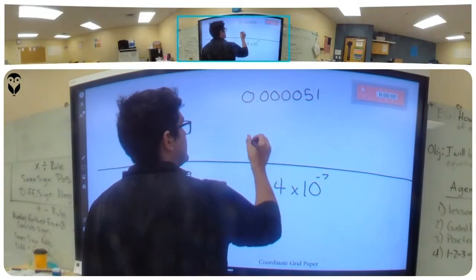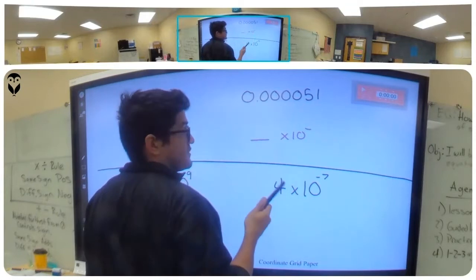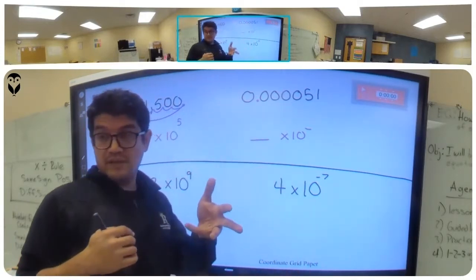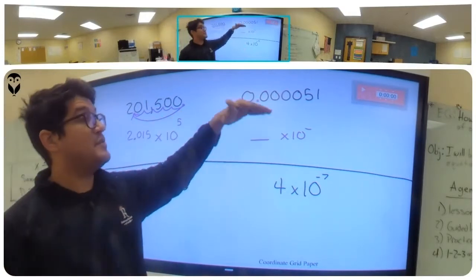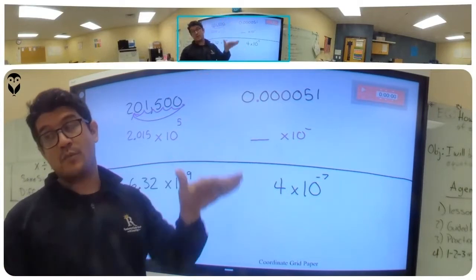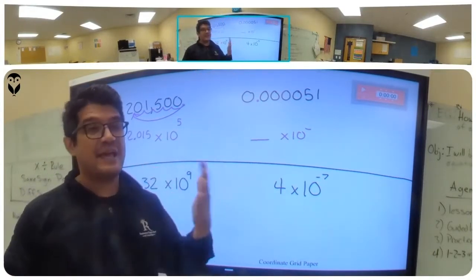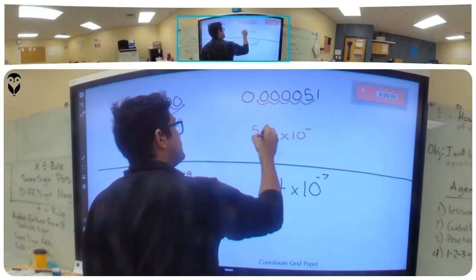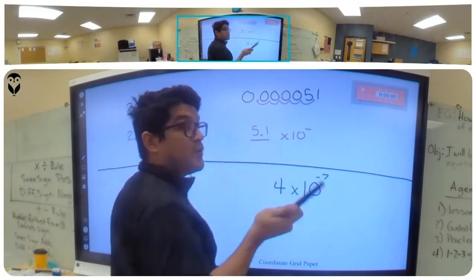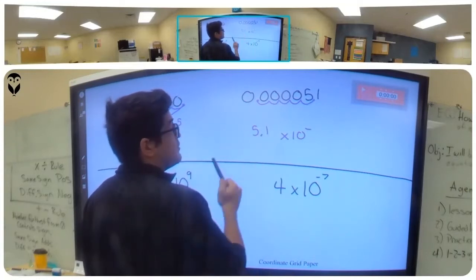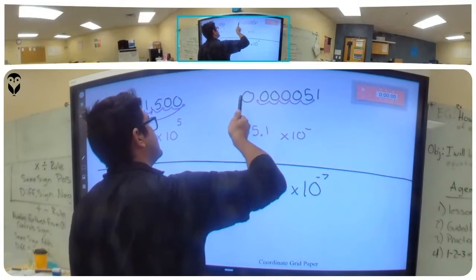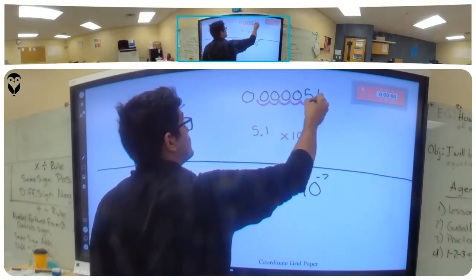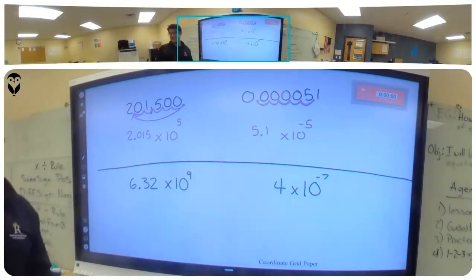For this next one, same thing — I need a number times ten to some exponent. But because this number is very small, I have to move the dot until the number is above one and less than ten. So not 0.51 — that's not above one. There it is: 5.1. How many times did I move the dot? One, two, three, four, five. Since the dot moved in the other direction, we write this as negative five. A negative exponent means it's a number less than one — very, very small.